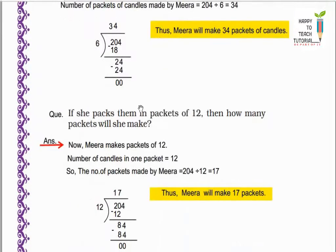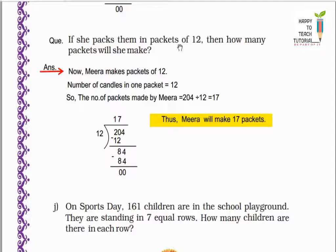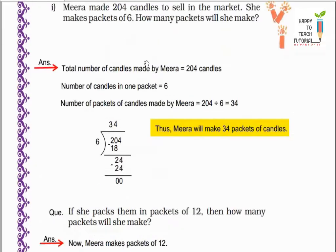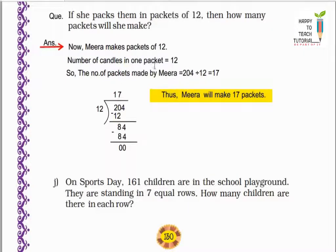Next: if she packs them in packets of 12, then how many packets will she make? Jaisa ki aage ke example mein dekha ki woh har ek packet mein 6 candles pack kar rahi thi. Ab is example mein puchha hai ki agar woh har ek packet mein 12 candles pack kare toh usse kitne packets banane padenge. Total candles are 204 and each packet has 12 candles, so we do 204 divided by 12.